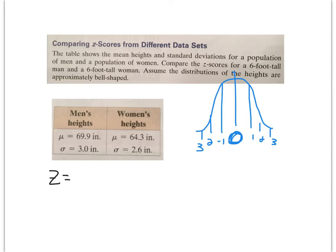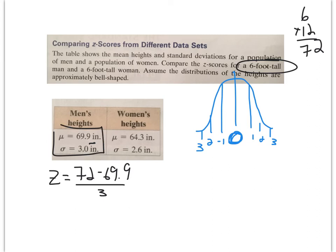Z equals the data point that we have: they are 6 feet tall. 6 times 12 is 72 inches, because we're dealing in inches. So 72 minus 69.9 divided by the standard deviation of 3. I'm getting this information from here and the 6-foot. Pause and simplify it.